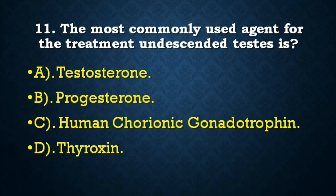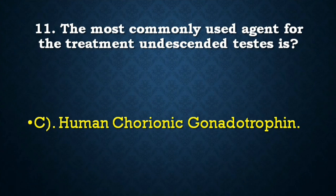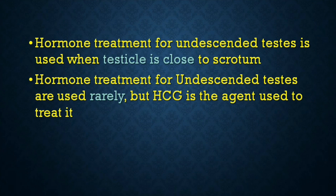Next question: The most commonly used agent for treatment of undescended testes is — testosterone, progesterone, human chorionic gonadotrophin, or thyroxine? Correct answer is human chorionic gonadotrophin (HCG). Hormone treatment for undescended testes is used when the testicle is close to the scrotum; HCG is the agent used to treat it.